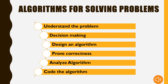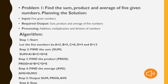Code the algorithm — coding is our final procedure and final step, which will lead us to write a computer program. So students, let us first check problem number one: what category of problem it is and what steps we need to generate its solution. If you look at your book, problem number one states: find the sum, product, and average of five given numbers.